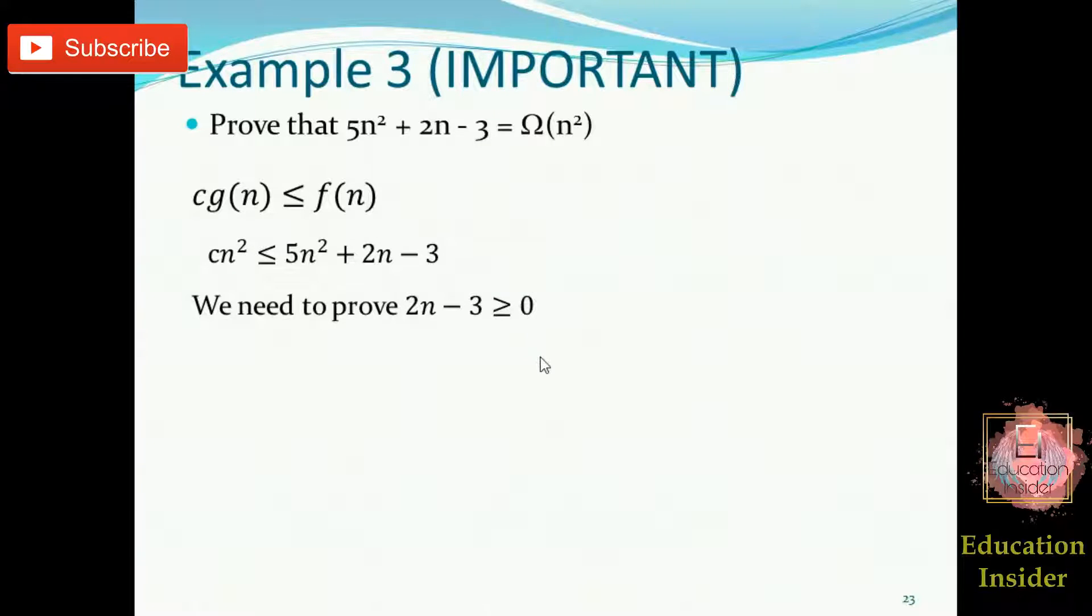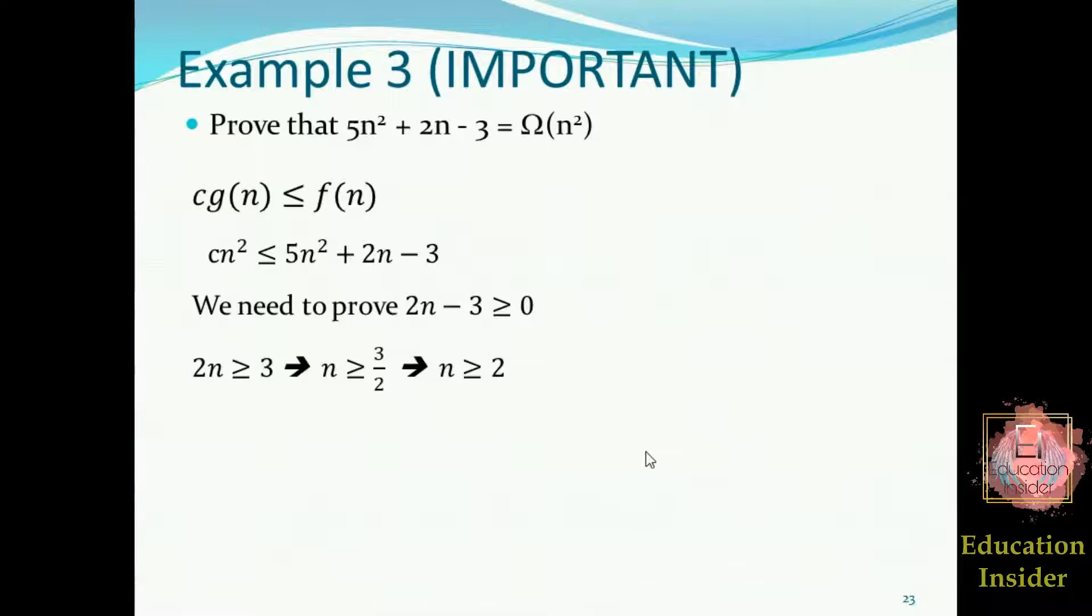So after doing some algebra we will be getting n as 2. Now listen, as we prove that when n is greater than equal to 2, then this 5n square plus 2n minus 3 is going to be greater than this cn square. So after inserting the value of n as 2 in this inequality, we will be getting c as 5. So yes we proved it. We find out the lower bound that is c equals 5 and n₀ equals 2.